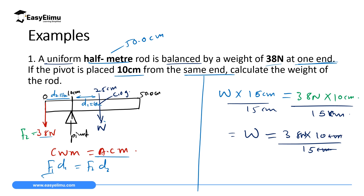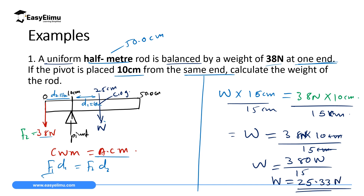Solving: 38 times 10 equals 380 newton-centimeters, divided by 15 centimeters. The centimeter units cancel, leaving weight equals 380 divided by 15, which equals 25.33 newtons. Remember, we always write physics answers to four significant figures. So the weight of this half-meter rod is 25.33 newtons. You can confirm this by substituting this weight back into the equation, and you will find the clockwise moment equals the anti-clockwise moment.